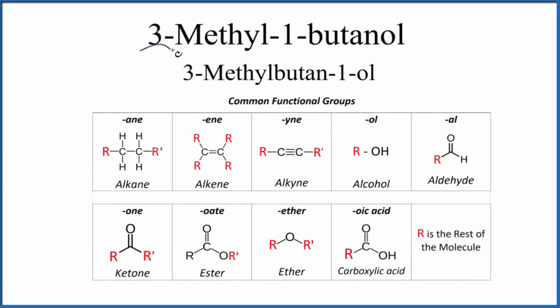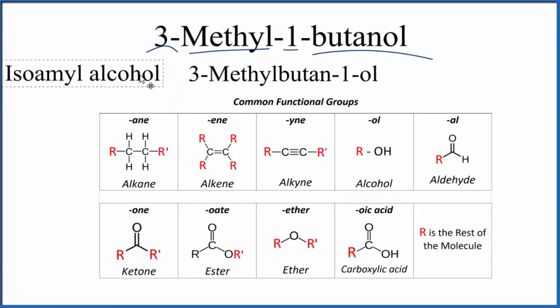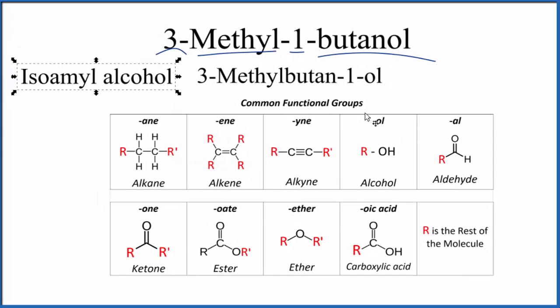Let's write the structural formula for 3-methyl-1-butanol. This is also called 3-methyl-butan-1-ol, and you'll even see it written as isoamyl alcohol, a bit of an older name.